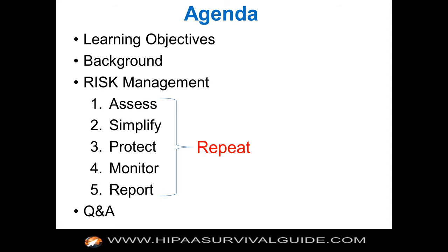Protect means implement security controls that you chose to attack those risks you wound up with after you simplified. Monitor means monitoring the effectiveness of your program over time, because you can't manage what you don't measure. Step five is a reporting step or governance. And step six is implicit: repeat. This is really a continuous process, and that's another reason we call it a program.